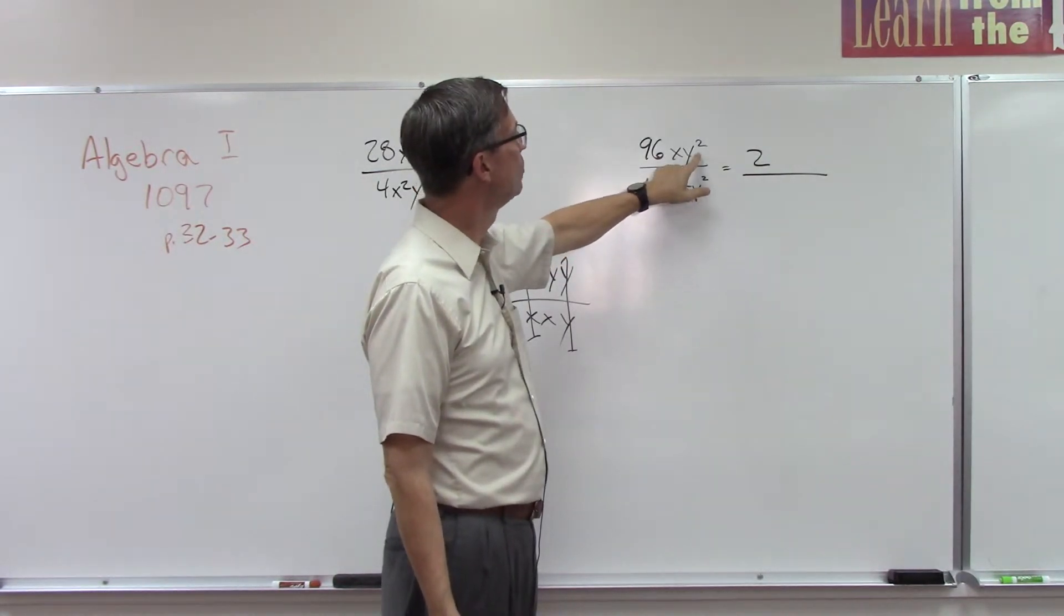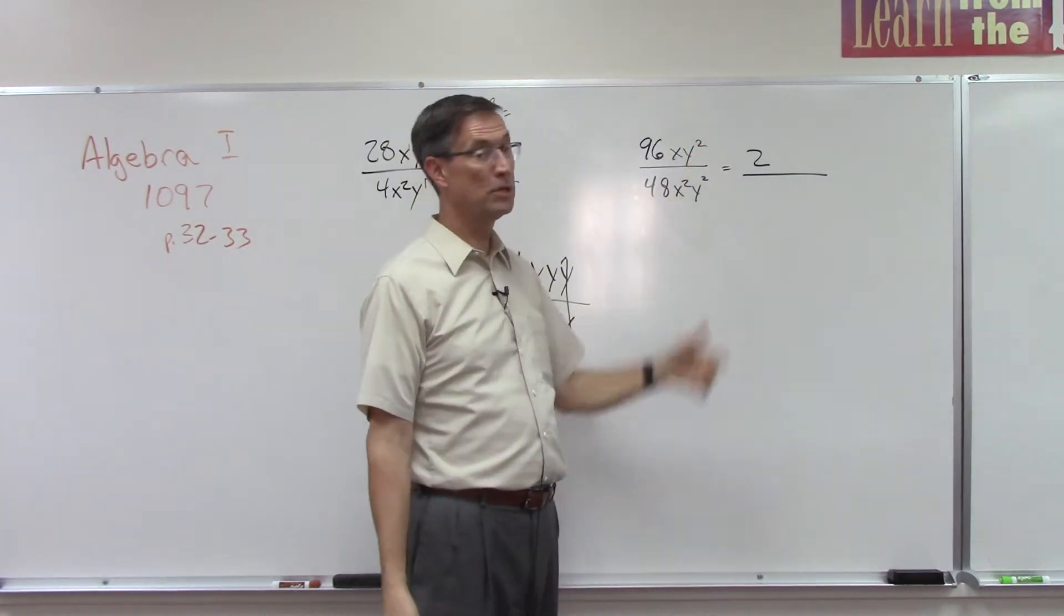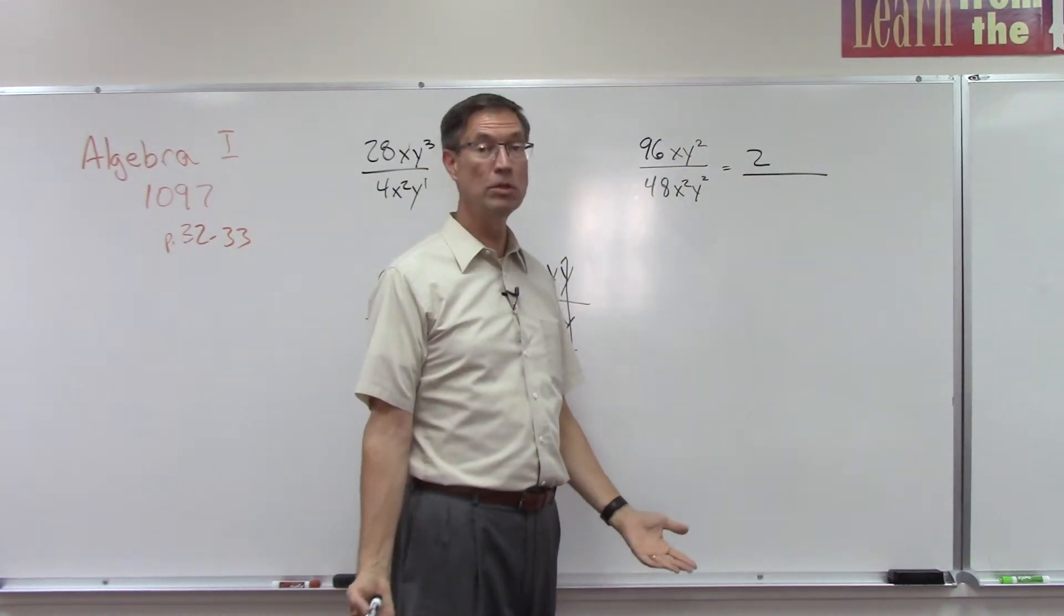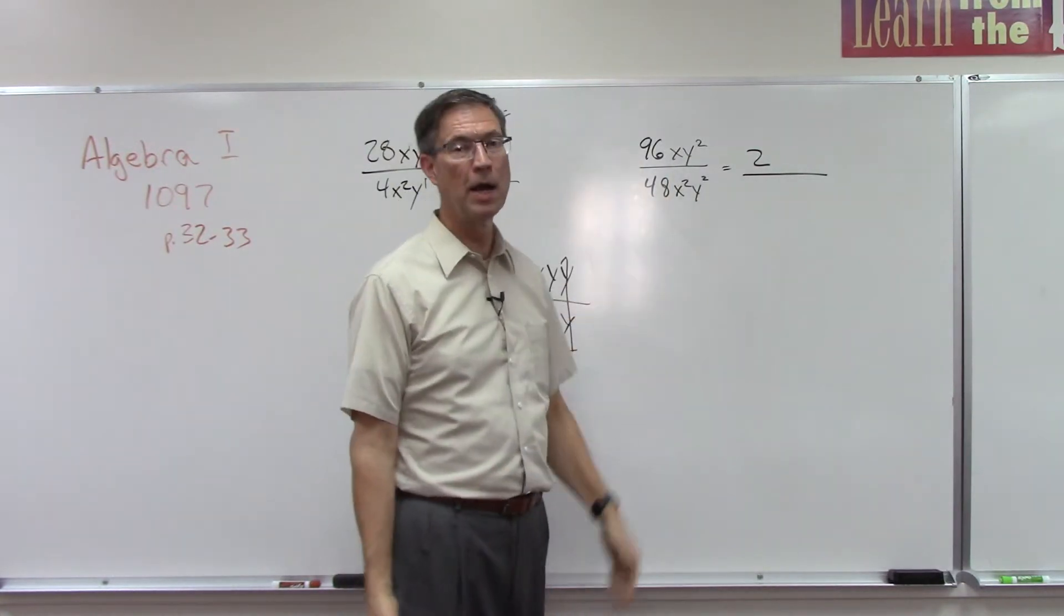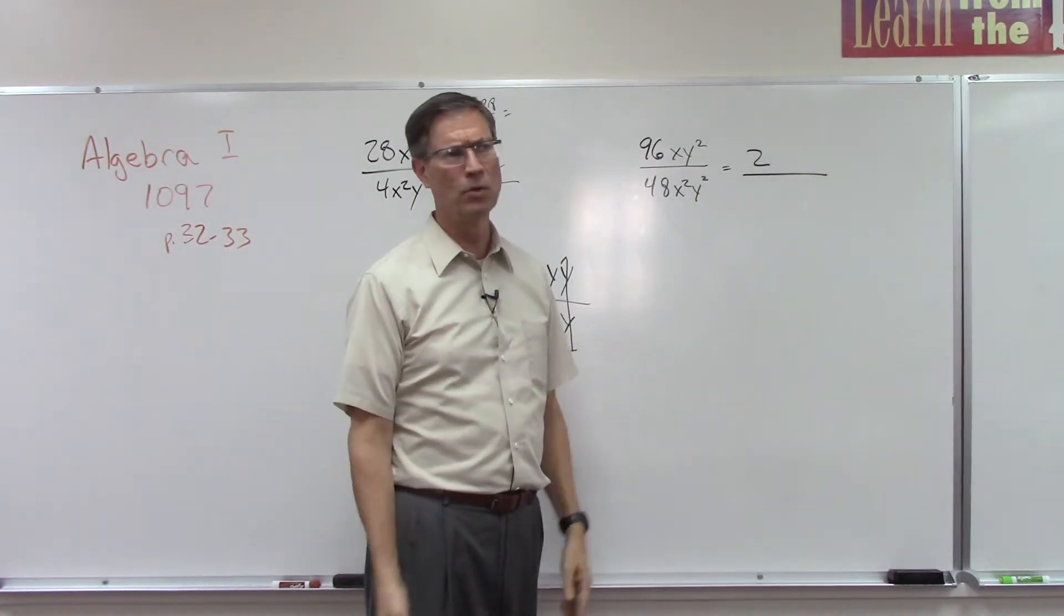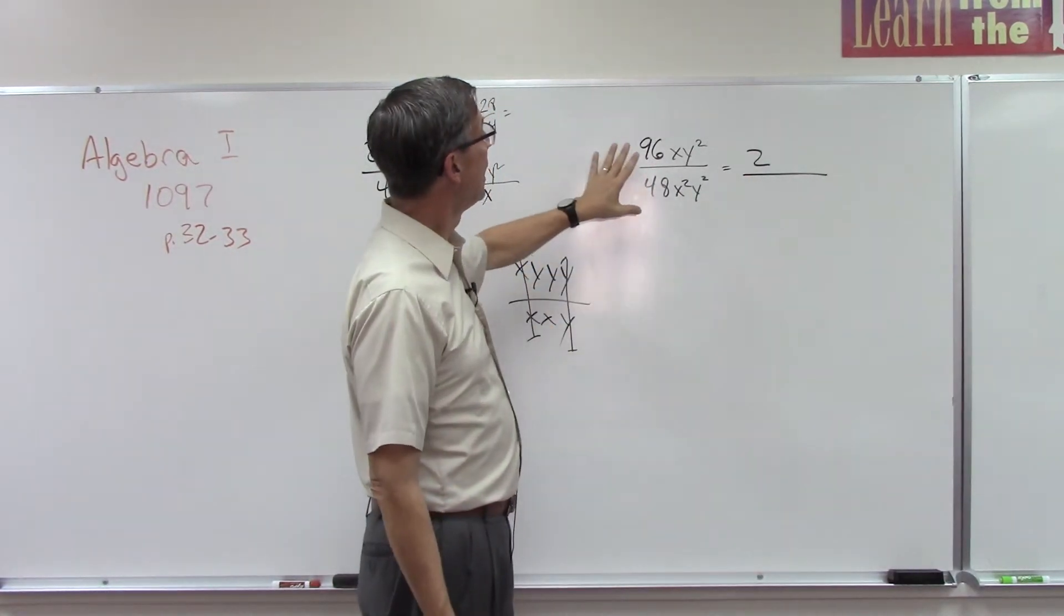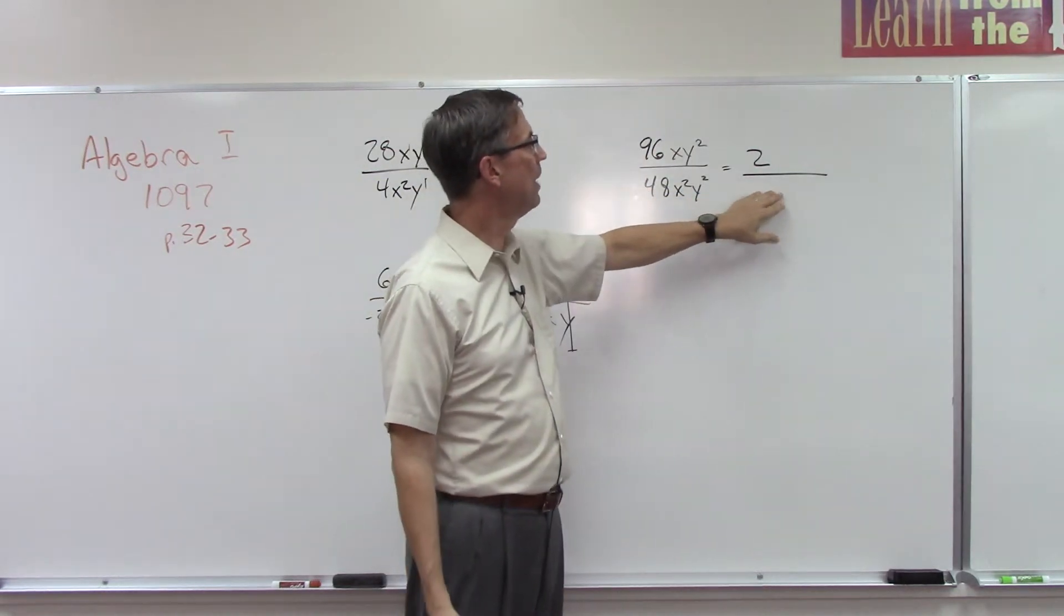And then look what happens with the y. I have 2 y's on the top, 2 on the bottom. Remember when we subtract 2 minus 2 and we get 0, anything to the 0 power is just 1. So it's like taking this whole thing times 1. In other words, at this point we can just take it out. We can ignore it.